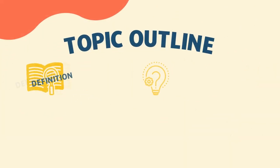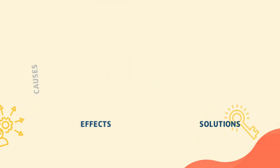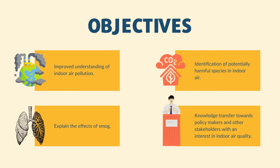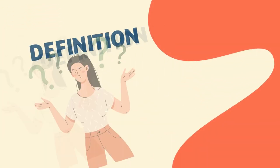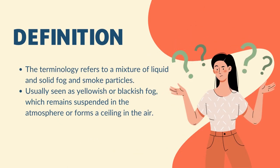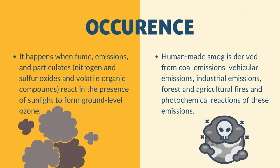Let's move on to smog. In smog, we are going to cover definition, causes, effects and solution. Our objectives are to improve understanding of indoor air pollution, identification of potentially harmful species in indoor air, explain the effects of smog, and knowledge transfer towards policy makers and other stakeholders with an interest in indoor air quality. Smog is air pollution that reduces visibility. The word smog is used to describe smoke and fog. The smoke usually comes from burning of fossil fuels and other smoke-producing pollutants. Today, most of the smog we see is photochemical smog, which is produced when sunlight reacts with nitrogen oxides and at least one organic compound in the atmosphere.